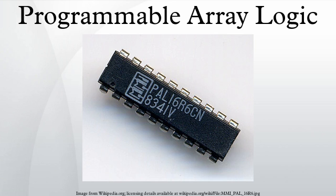The PALASM compiler was written by MMI in Fortran 4 on an IBM 370-168. MMI made the source code available to users at no cost. By 1983, MMI customers ran versions on the DEC PDP-11, Data General Nova, Hewlett-Packard HP-2100, MDS-800, and others.